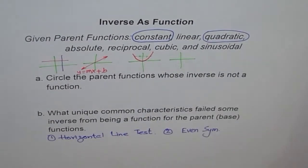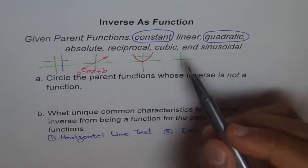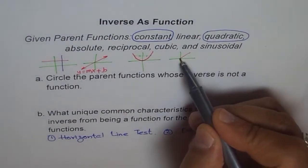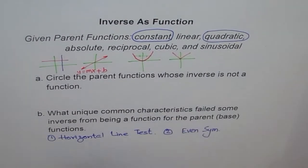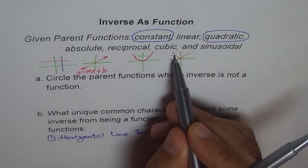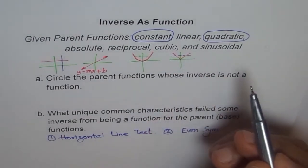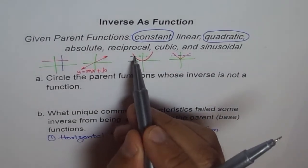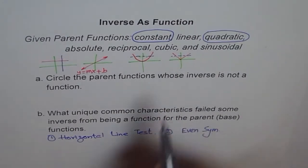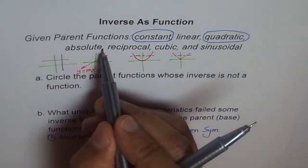How about the absolute value function? The absolute value function is also even and it fails the horizontal line test. So its inverse is not a function — let me circle this one also.